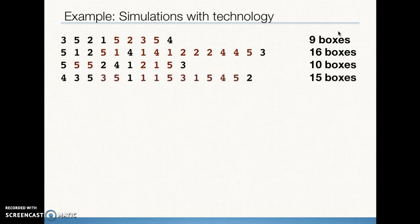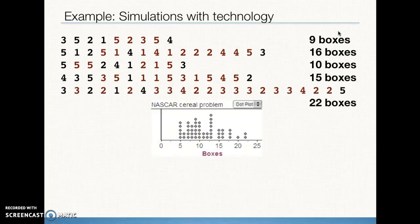On our fourth trial, 15 boxes. On our fifth trial, 22 boxes before we were able to get the five cards.